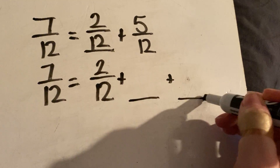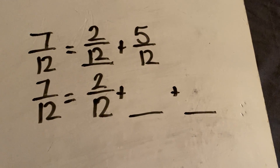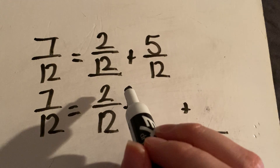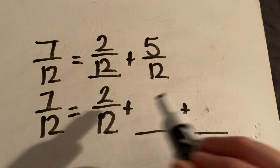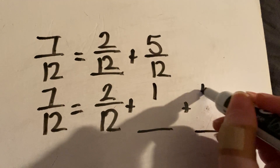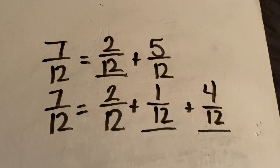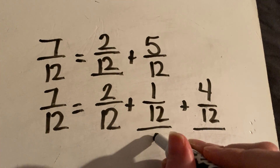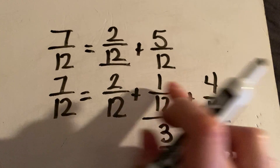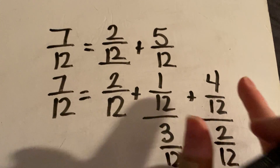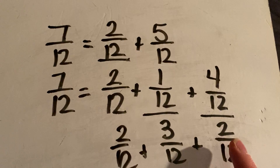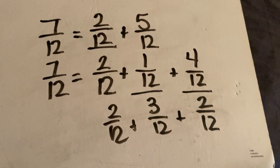Then it has seven twelfths equals two twelfths plus something plus something — now you've got two fractions to come up with. If I start with seven and take two away, I have five left. I need two fractions whose numerators add to five — that could be one and four, or three and two. As long as when you add it all up it makes seven. Two plus one is three, plus four is seven — that works. Two plus three is five, plus two more is seven — that works too. So there are multiple answers for these.